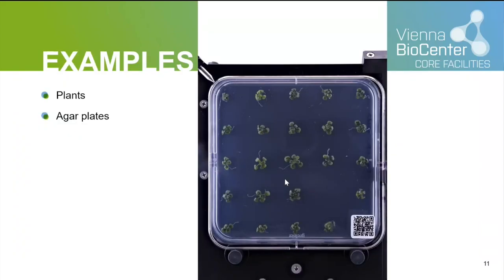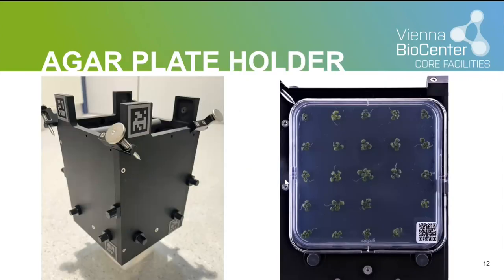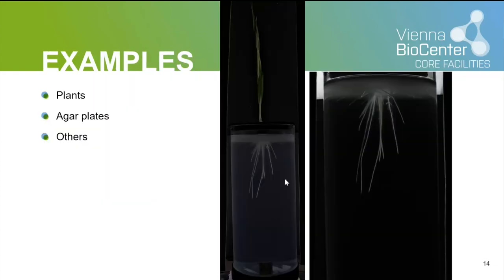We also moved on to screening Arabidopsis seedlings on agar plates. We built a holder that fits four plates, so you can prepare the next four while the current four are imaging. One imaging round for the agar plates takes about 40 seconds, so you have time to prepare your next samples and maintain a more or less continuous workflow.